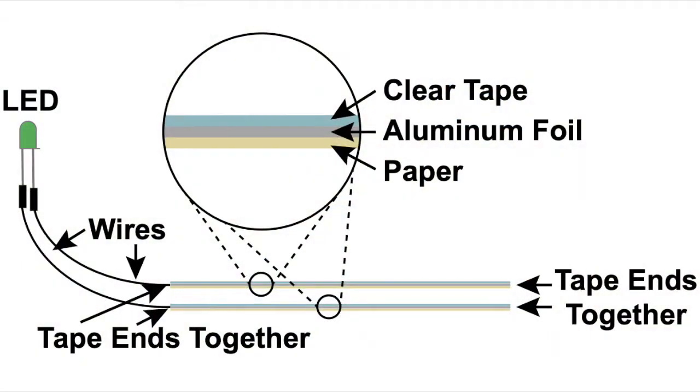The type of TENG we're building today consists of two identical paper strips. Each paper strip has the end of a wire placed partway onto it, and the exposed metal of that wire is covered with some aluminum foil. The aluminum foil is then secured to the wire and paper with some transparent tape.